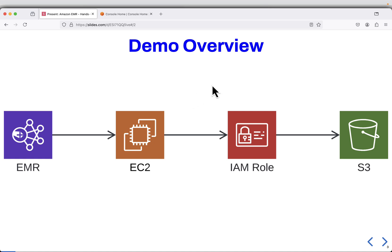This is the demo overview. We have an EMR cluster which will be running on a single EC2 instance. That single EC2 instance needs some kind of IAM role to communicate with S3. S3 will contain input data, output results, and the Spark job, which is a Python file.